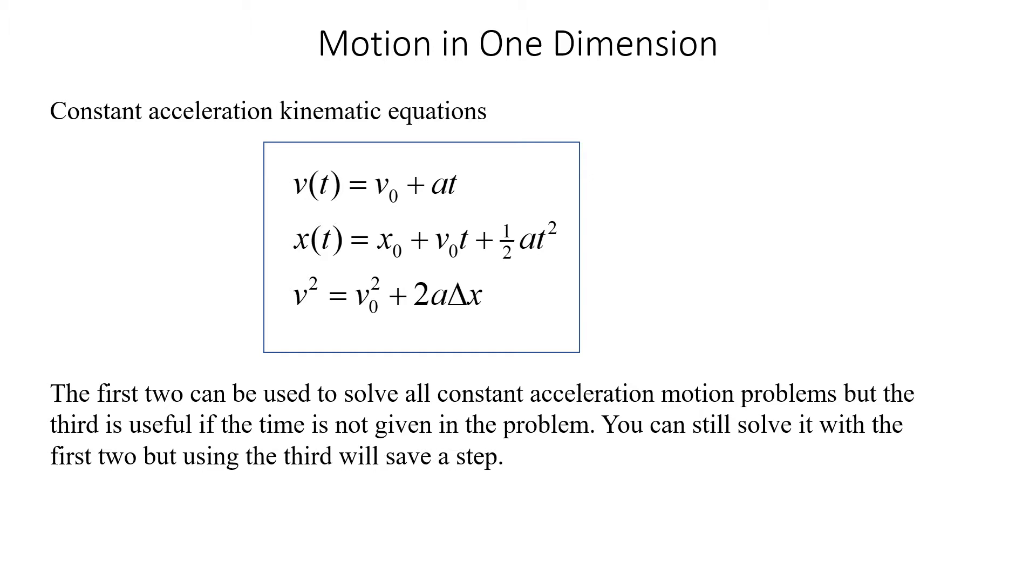We have the velocity as a function of time equals v naught plus at, where v naught is the initial velocity. We have position as a function of time, x of t equals x naught plus v naught t plus 1 half at squared. x naught, of course, is our initial position. v naught is initial velocity. And a is our constant acceleration.